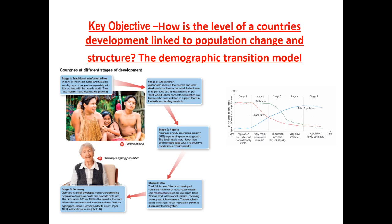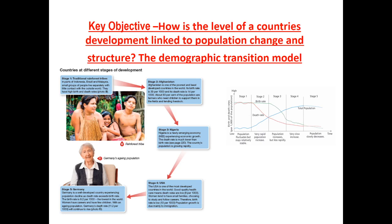In stage three we get to NIEs - birth rate drops a little and starts to get close to the death rate, because in NIEs people start to have fewer children as the culture and need to have children is reduced. Stage four is where the UK is - birth rate only slightly above death rate, population still going up. Stage five is a few countries - Japan and Italy - where for the first time the birth rate drops below the death rate so the population starts to decrease. This is because children are expensive so people have fewer of them, women have careers so they have children later and therefore fewer, and less emphasis is placed on having bigger families. Hopefully you've annotated around this - stage one is the poorest LICs, stage two are LICs, stage three are NIEs like China, India, Brazil, stage four are HICs like the UK, stage five is very few countries - you'll see it's in a dotted line because it wasn't there originally.